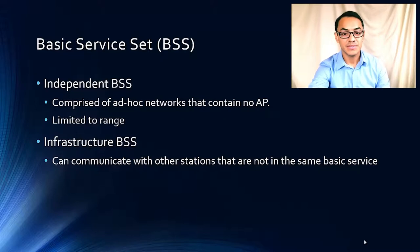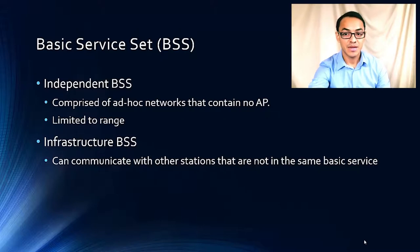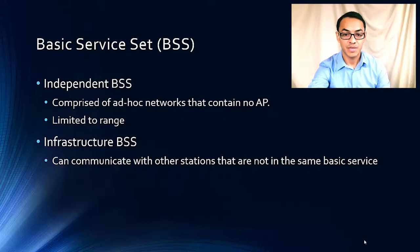With our BSS, there are two types: independent BSS and infrastructural BSS. In independent BSS, there are ad hoc networks that contain no AP. Since they cannot connect with any other infrastructure, they are limited in range. Infrastructure BSS are quite the opposite — they can communicate with other stations that are not in the same basic service set by communicating via APs.